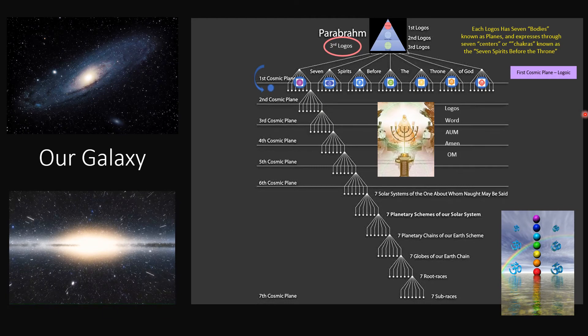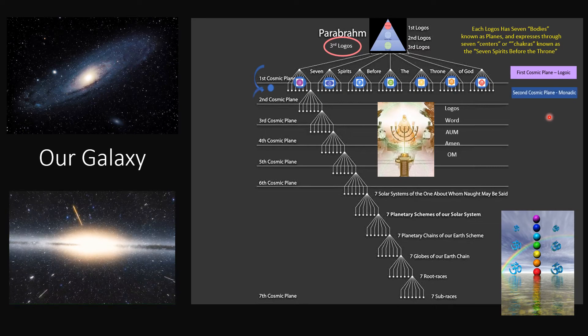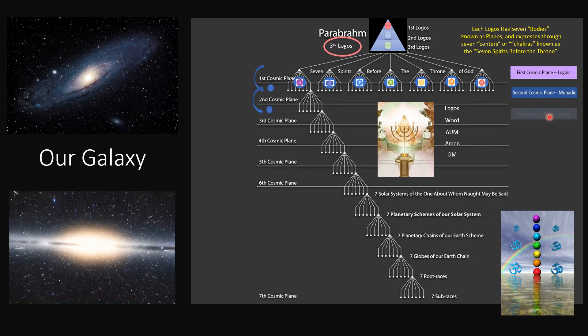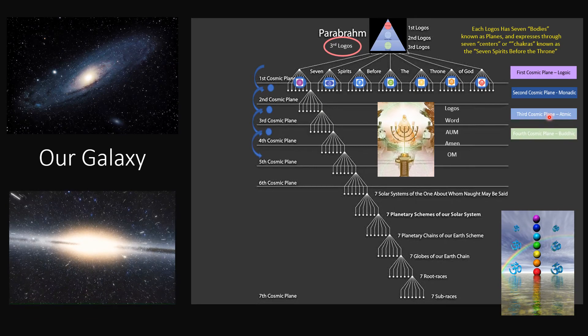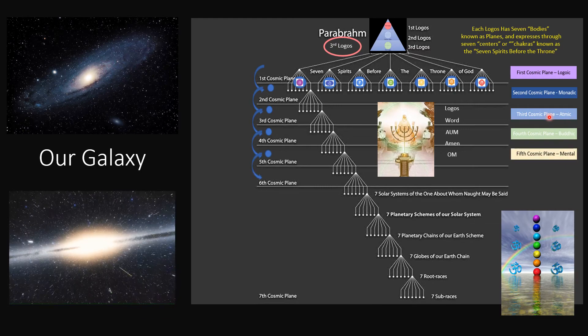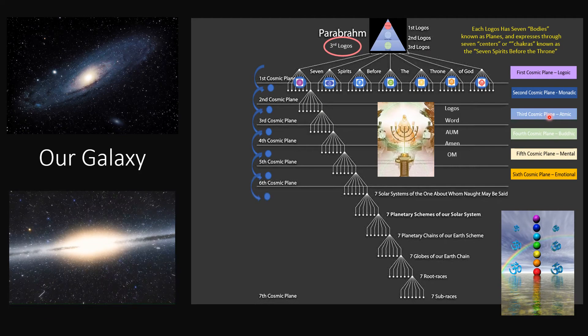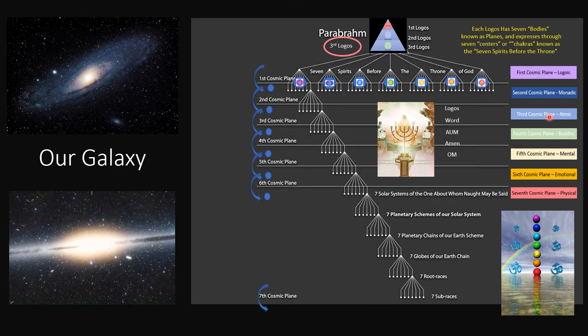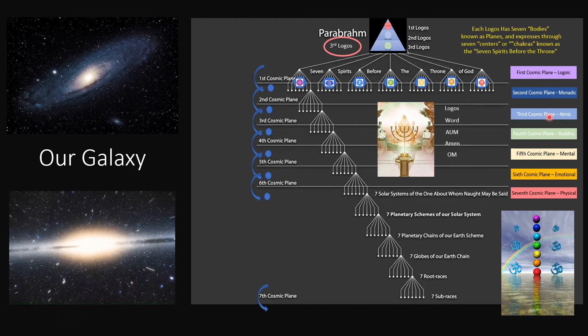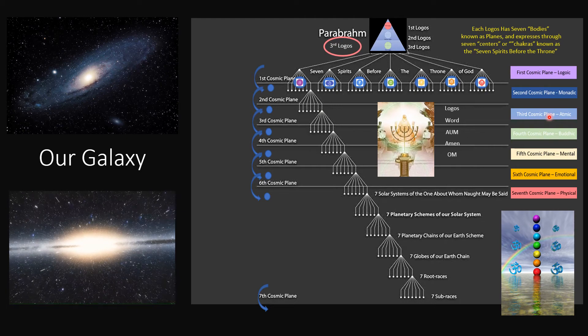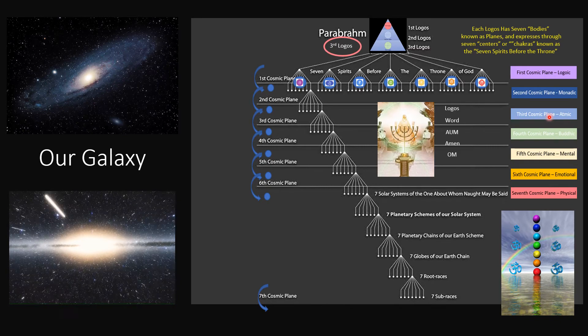So where are we? Well, we're not on the first cosmic plane, the Logoic cosmic plane. It has already descended below that to the Monadic second cosmic plane, to the Atmic third cosmic plane, to the Buddhic fourth cosmic plane. We're still descending to the Monastic fifth cosmic plane, to the Emotional sixth cosmic plane. Where are we? We are all the way down here at the seventh cosmic plane. So in other words, we're in the seventh chakra. So we're in a universe in Parabrahma, the Milky Way galaxy, living within the seventh chakra, so to speak, down in the physical plane.